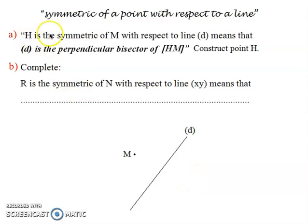For example, H symmetric of M with respect to D. Point H is symmetric of M with respect to line D. How to construct H? How do we draw it? Line D, which we're talking about, which is the axis of symmetry in this case, is the perpendicular bisector of segment MH. I can't call D a midpoint because it's a straight line. It is the perpendicular bisector of segment MH.